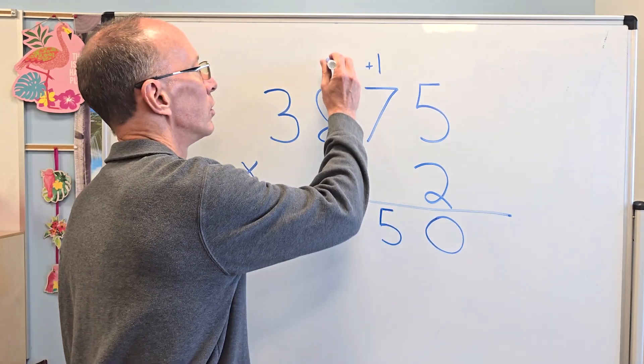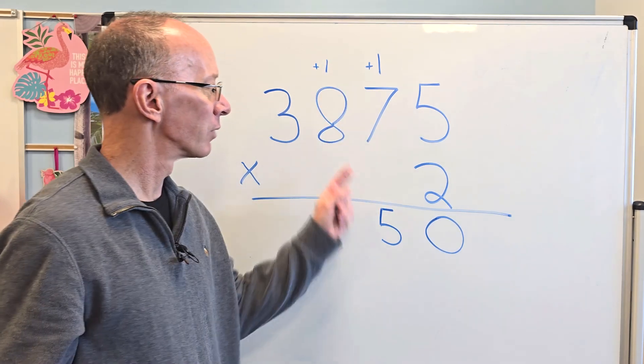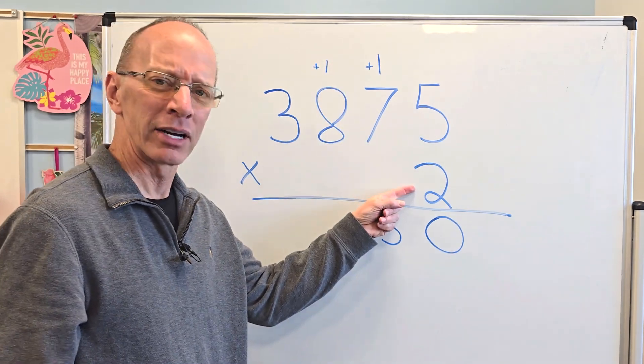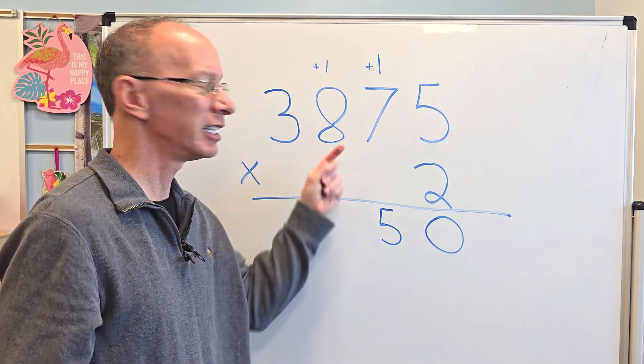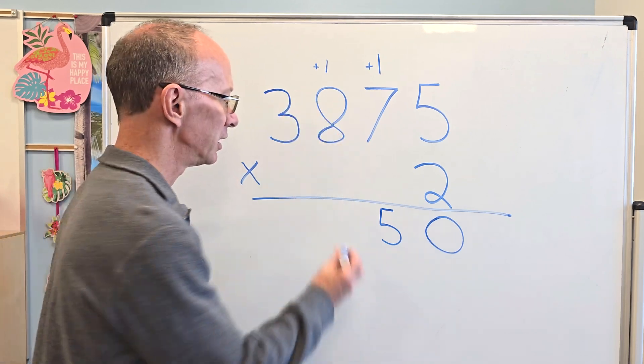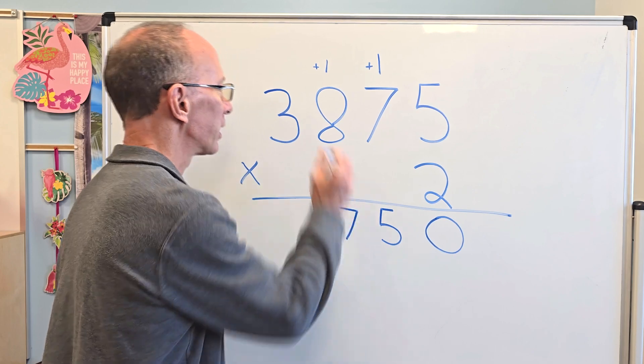Carry that 1 over here. Again, we're going to multiply 2 times 8. So 2 times 8 is 16 plus the 1, 17. So I put the 7 right here. Carry the 1.